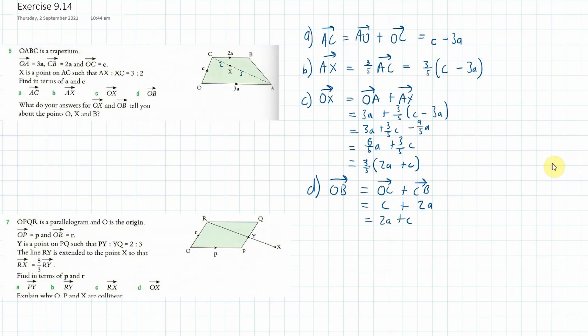Now the last question. What do your answers about OX, which is this one here, and OB tell you about the points O, X, and B? Well, we got that it was 3 fifths of the way along the line O to X. And that means that this is 2 fifths of the way along there. So what does that actually tell us? I'm not entirely sure what they're asking for there.